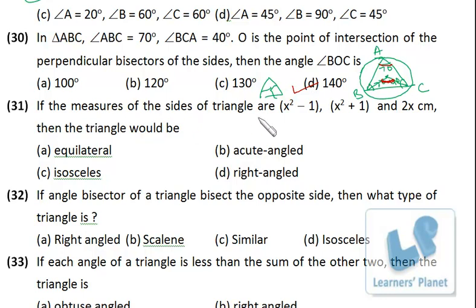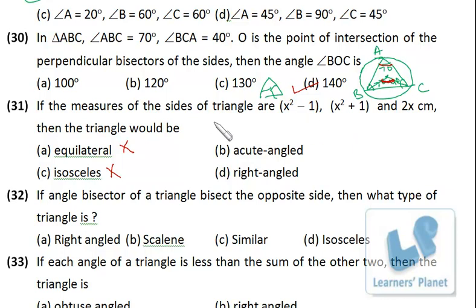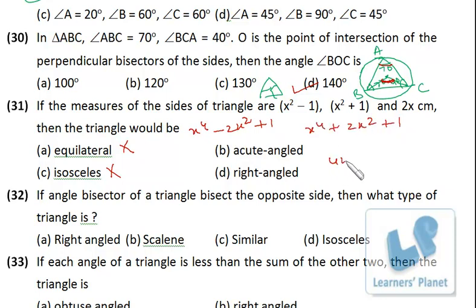If the measures of the sides of a triangle are given — these three values — what type of triangle would it be? The three sides are all different, so it cannot be equilateral or isosceles. Let's try for a right angle triangle. If it is a right angle triangle, the sum of the squares of two sides will equal the square of the third side. So I just square them: it is x⁴ minus 2x² plus 1, and x⁴ plus 2x² plus 1, and 4x².